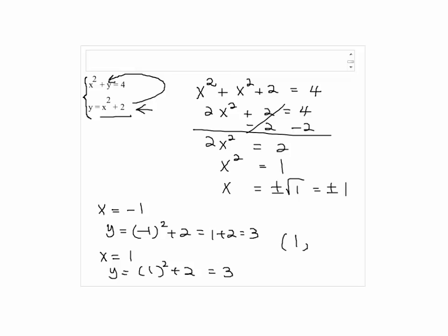So there are two answers. One is (1, 3), and the other one is (negative 1, 3).